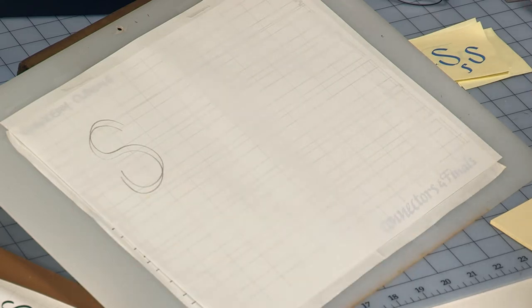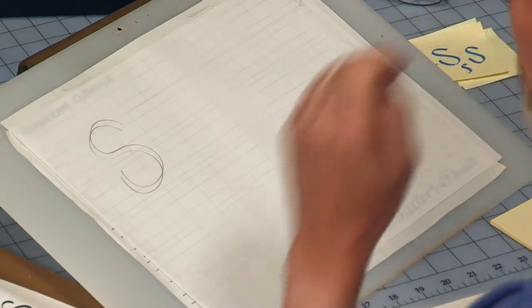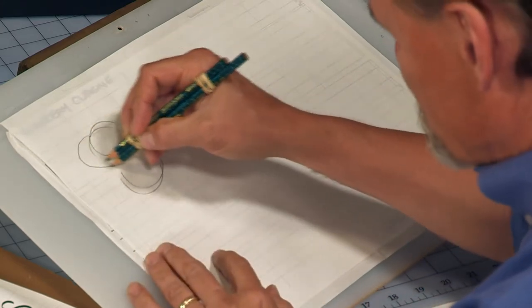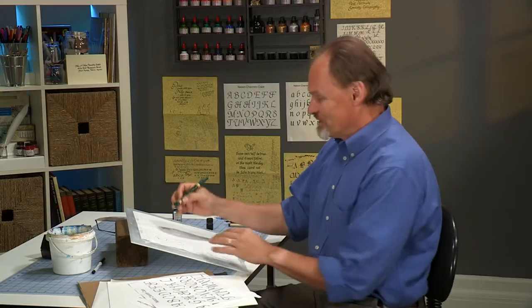So there are a number of modifications we need to make to that sort of traditional s to make it chancery cursive, and it's a little bit hard to describe exactly what those things are. Let's start with the middle curve, which I call an s curve when we're doing every other letter. Now it really is an s curve.